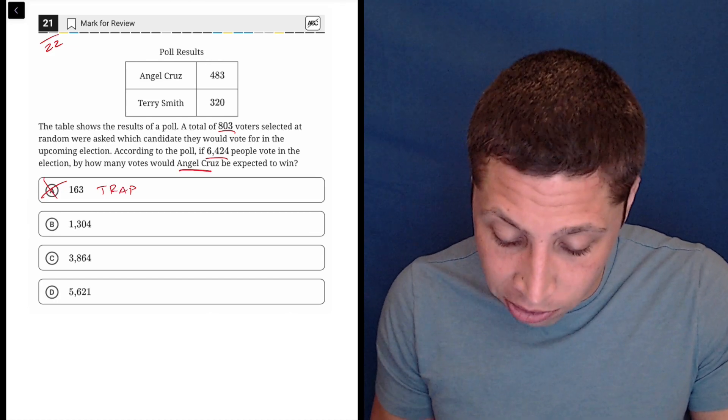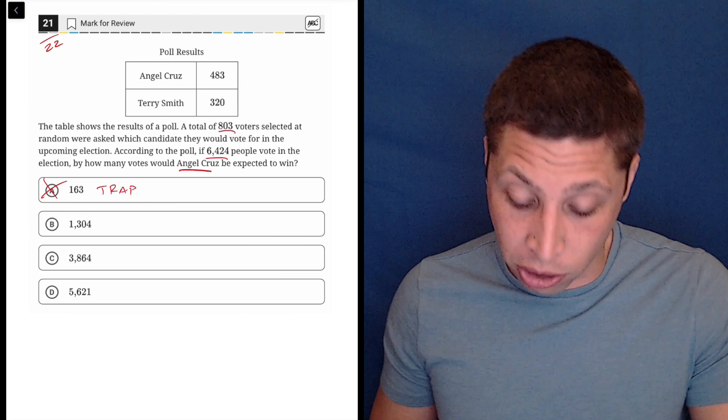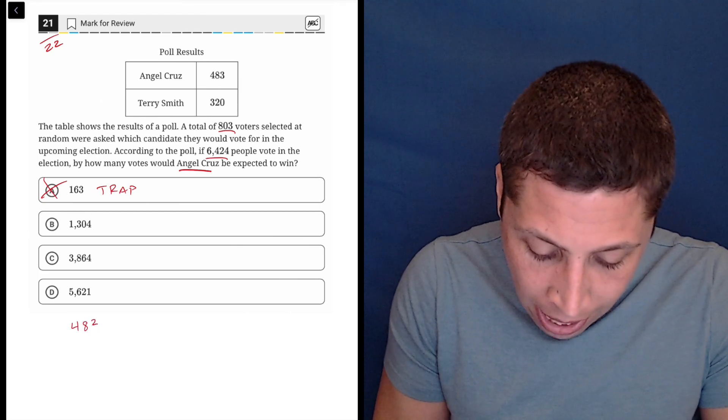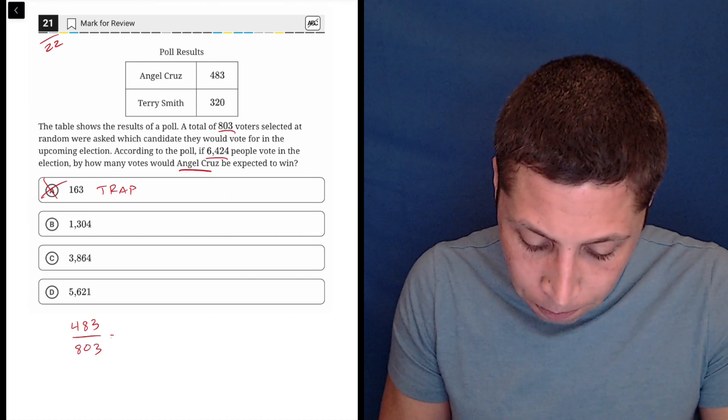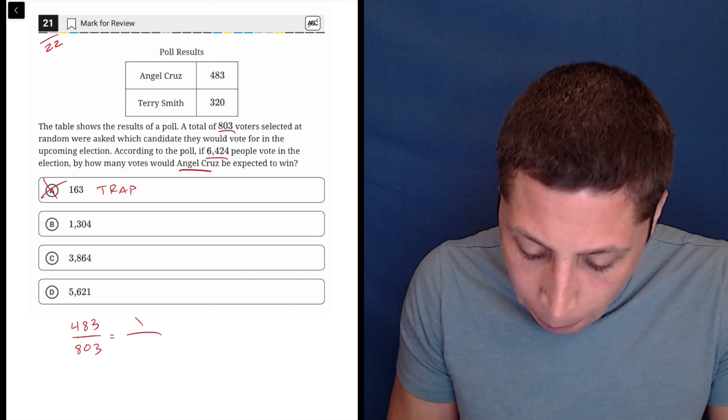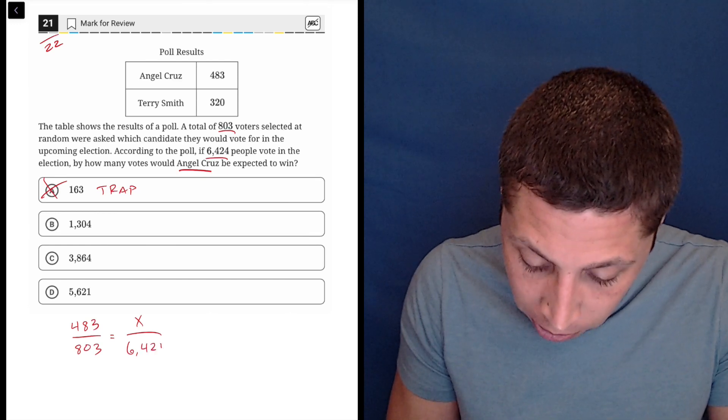So let's do Angel since he's the one who we're focused on. So he has 483 votes out of the 803 votes cast in this poll. So I want to know how many votes would he actually get of the 6,424?